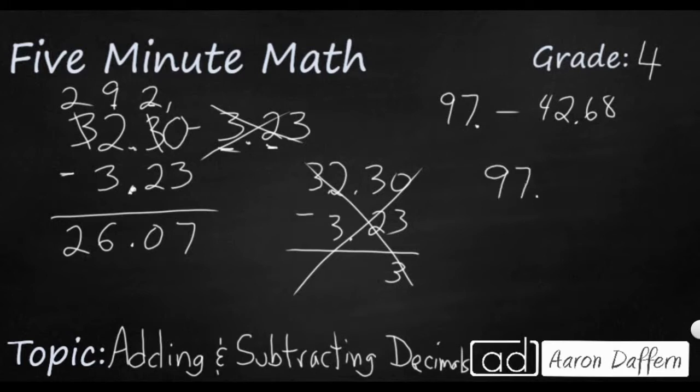I'm going to write it like this. So 42 and 68 hundredths. But please, please, please put zeros here. You can put zeros right there. And now we can subtract.